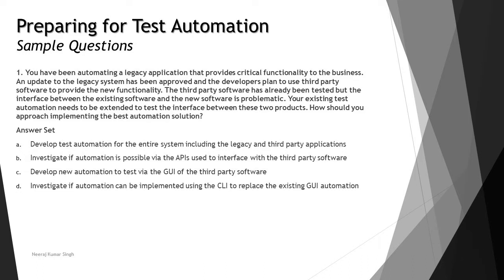The various options include: A — develop test automation for the entire system including the legacy and third-party application. From the tutorials we understand that not everything in the application can be automated, and it's not actually required because there are certain features which may not be automated. So we need to identify those — not 100% automation is possible.